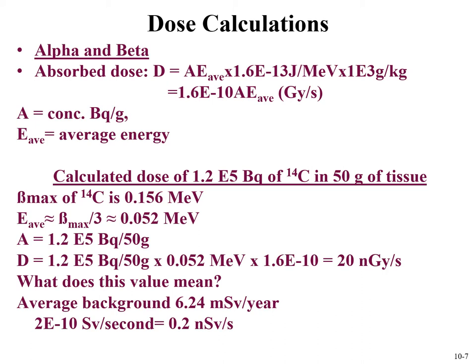If we compare this to the average background of 6.24 millisieverts per year — about 2 × 10⁻¹⁰ sieverts per second — this calculated dose is two orders of magnitude larger than background. So this 20 nanogray per second is roughly 100 times background, a reasonable value to compare with a meaningful reference.